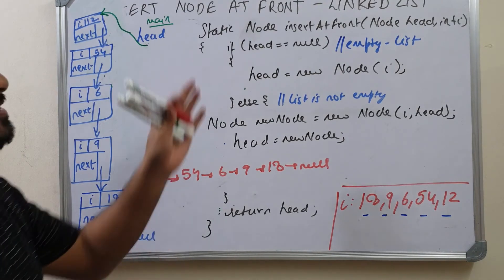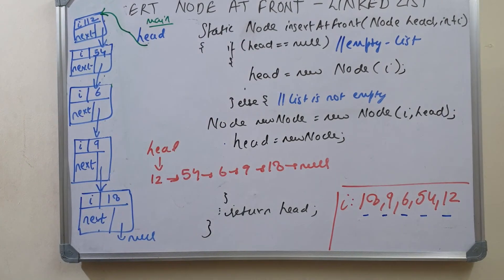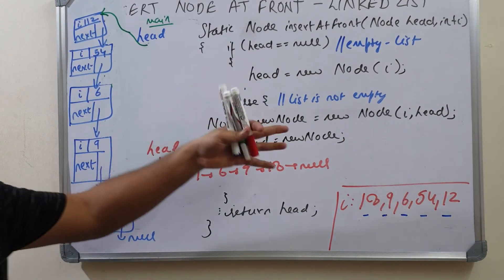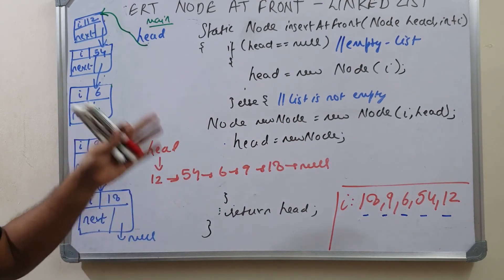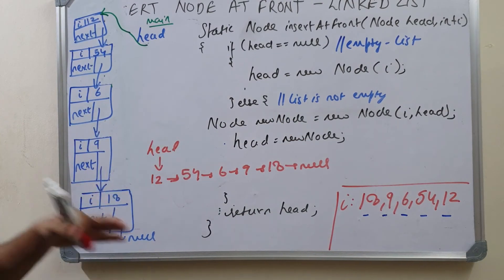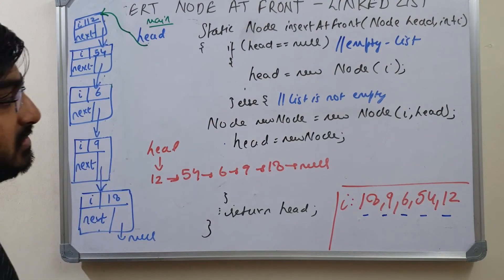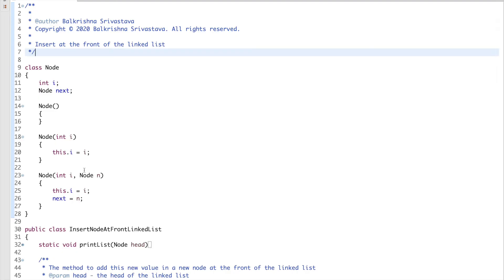This is how you insert a new node at the front of the linked list. We will just run the code and see the results, and then move on to inserting at the end of the linked list and somewhere in the middle of the linked list.